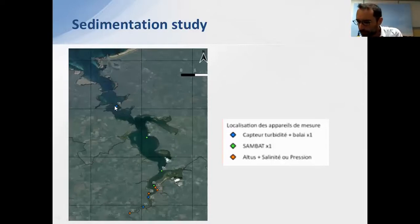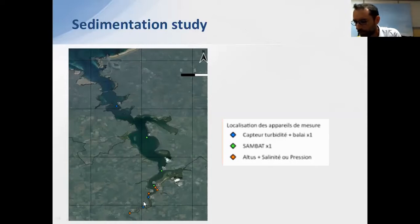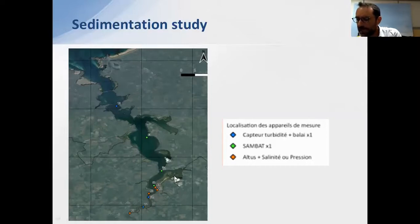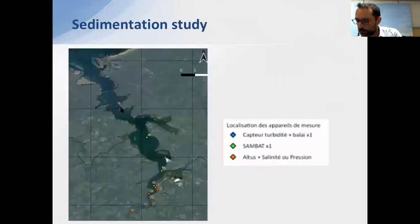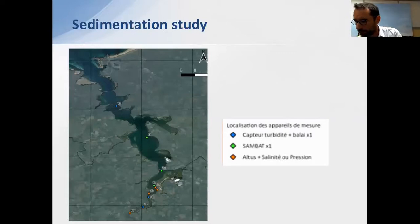On the map you can see the estuary — the Channel area, Saint-Malo, the dam, and the river. You can see the different colored dots representing different instruments. The Altus instruments were installed far from the dam in order to understand where the sediment comes from, since the mud found on the beaches originates from the river, not the sea. This helps understand both sedimentation and upstream erosion.